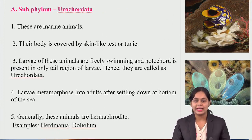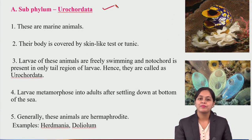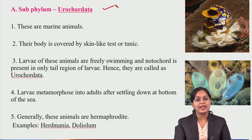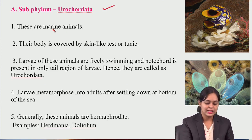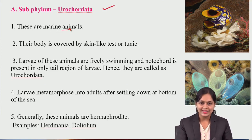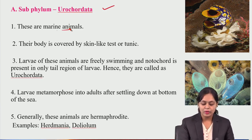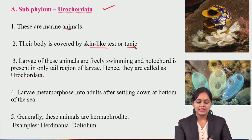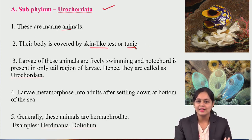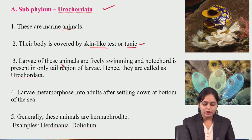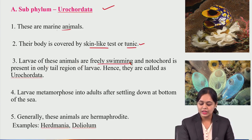The first subphylum is Urochordata. These are marine animals whose body is covered by a skin-like covering called a tunic — it is not actually skin but skin-like, that is why it is also called a tunic. The larvae of these animals are freely swimming.